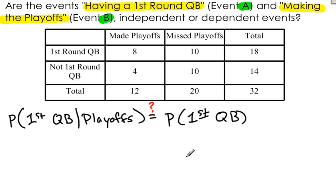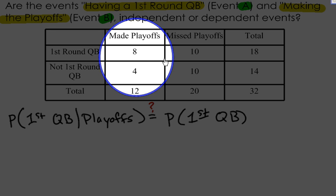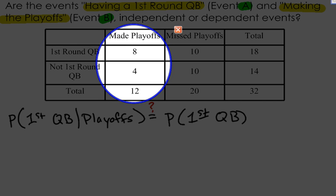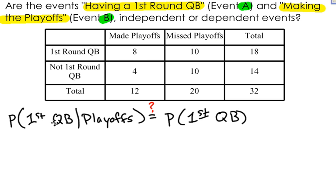Let's find the two probabilities. Starting with the probability of having a first-round quarterback given that you made the playoffs — as soon as I see the word 'given,' I'm only looking at the teams that made the playoffs. Given that they made the playoffs, there were 12 teams, and 8 of them had a first-round quarterback. So this probability is 8 out of 12.